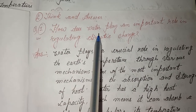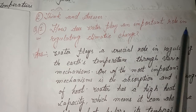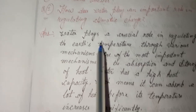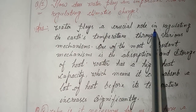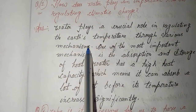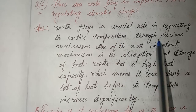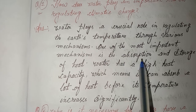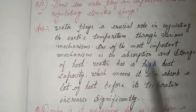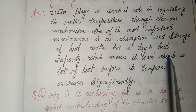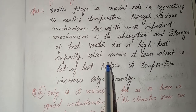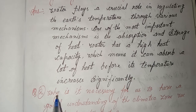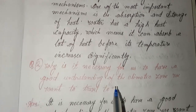Think and answer, Lesson 6 — Weather and Climate. First, how does water play an important role in regulating climatic change? Answer: Water plays a crucial role in regulating the earth's temperature through various mechanisms. One of the most important mechanisms is the absorption and storage of heat. Water has a high heat capacity, which means it can absorb a lot of heat before its temperature increases significantly.